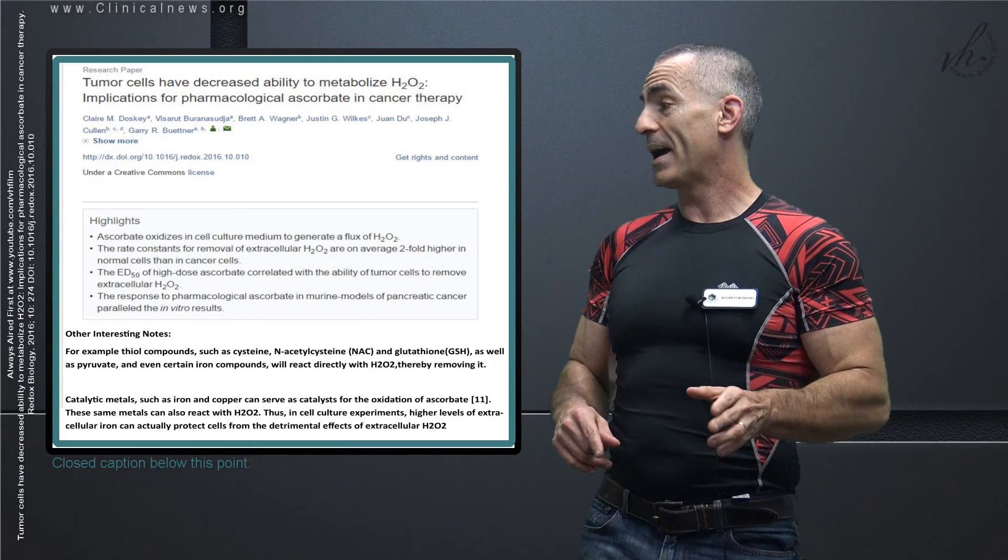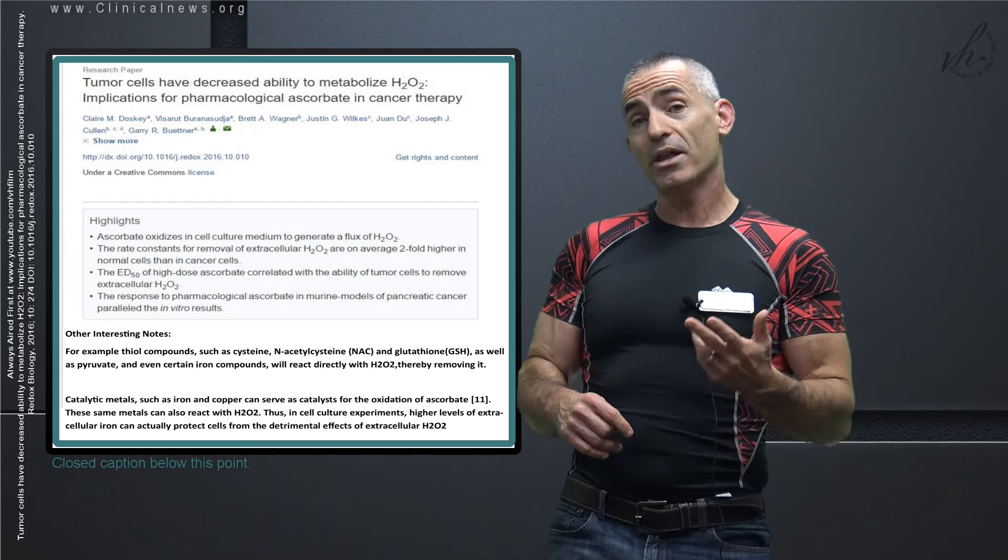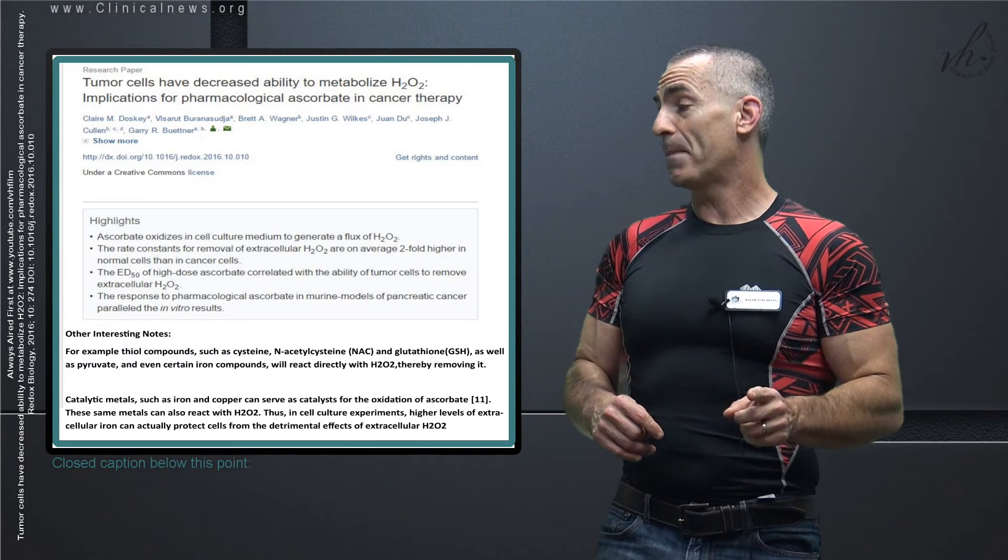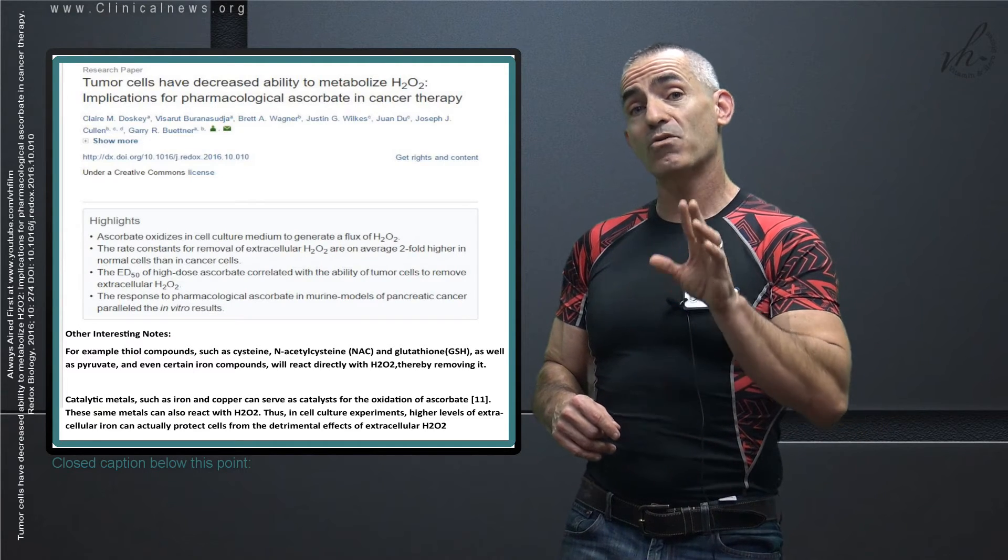For example, thiol compounds, such as cysteine, N-acetylcysteine, and glutathione, as well as pyruvate, and even certain iron compounds will react directly with hydrogen peroxide, thereby removing it.